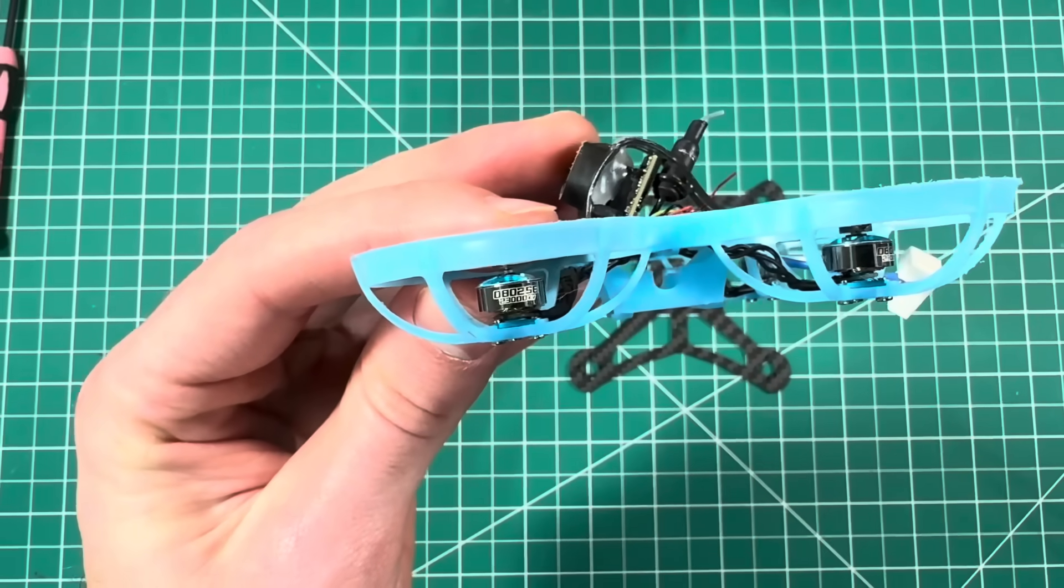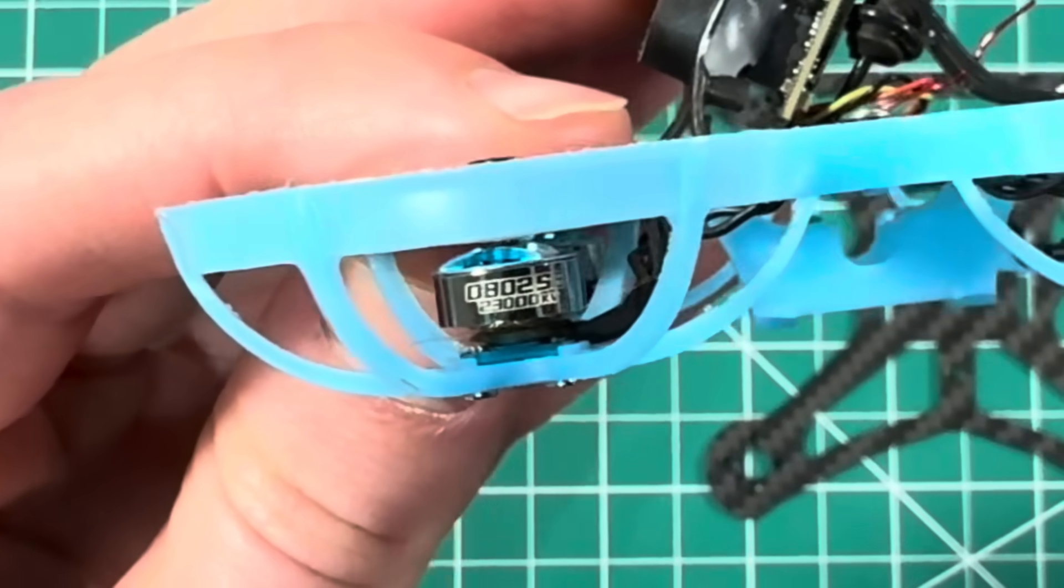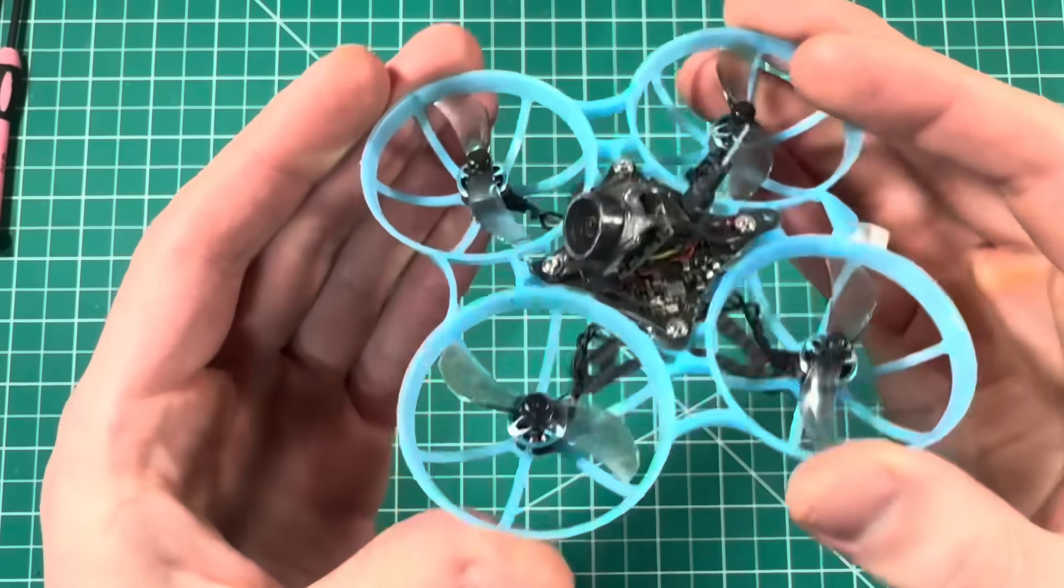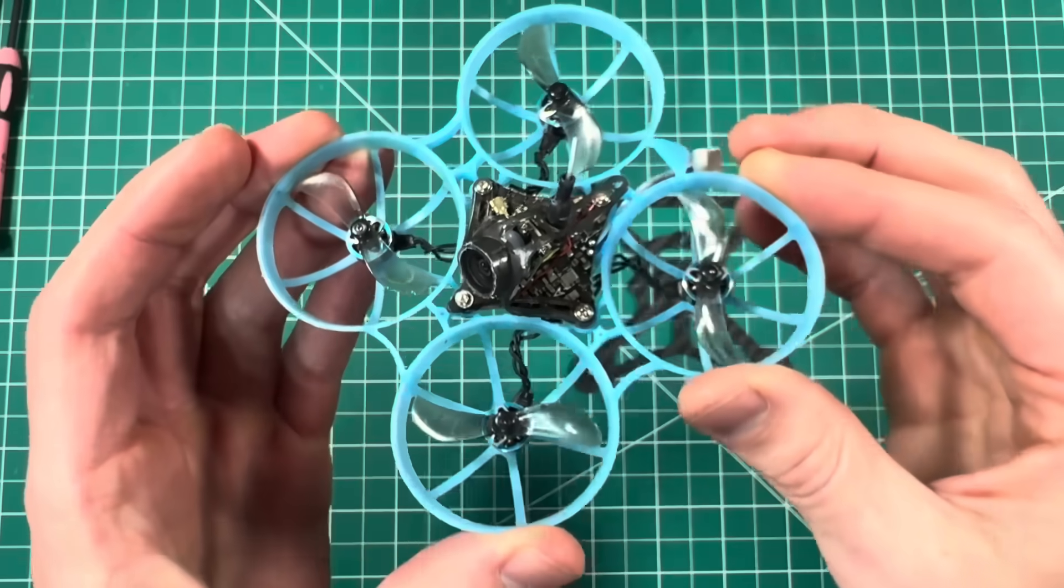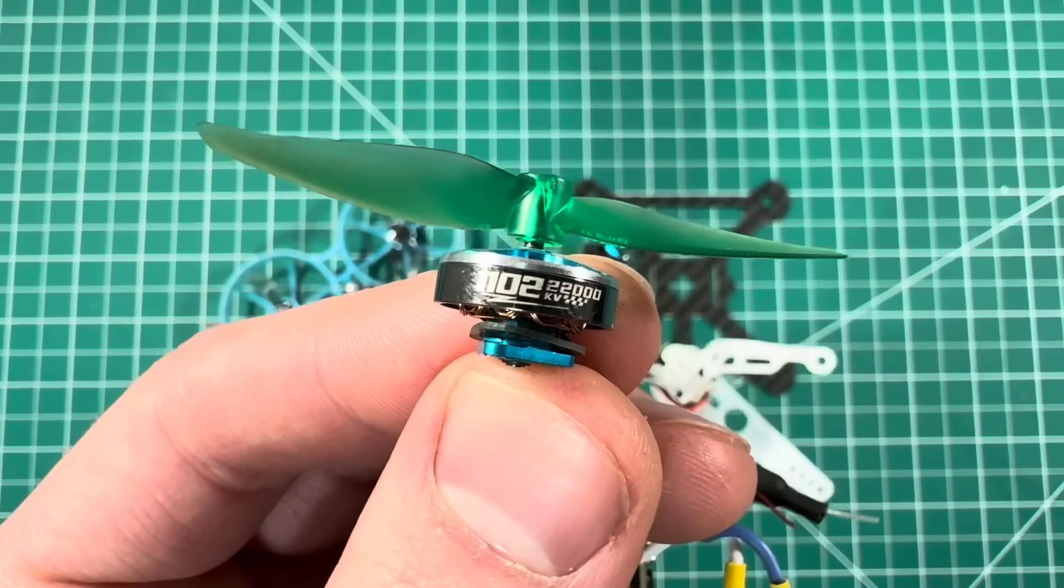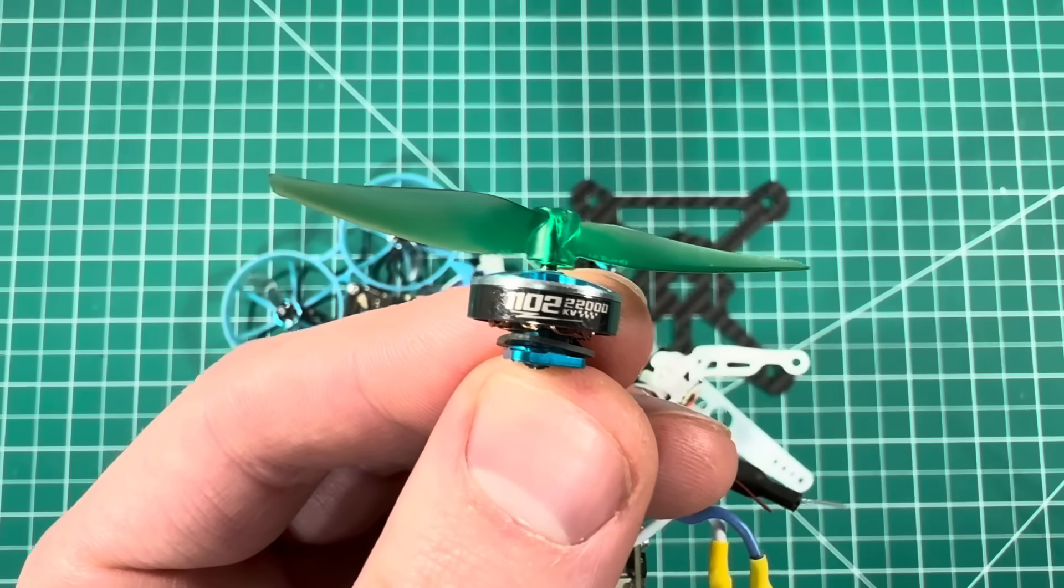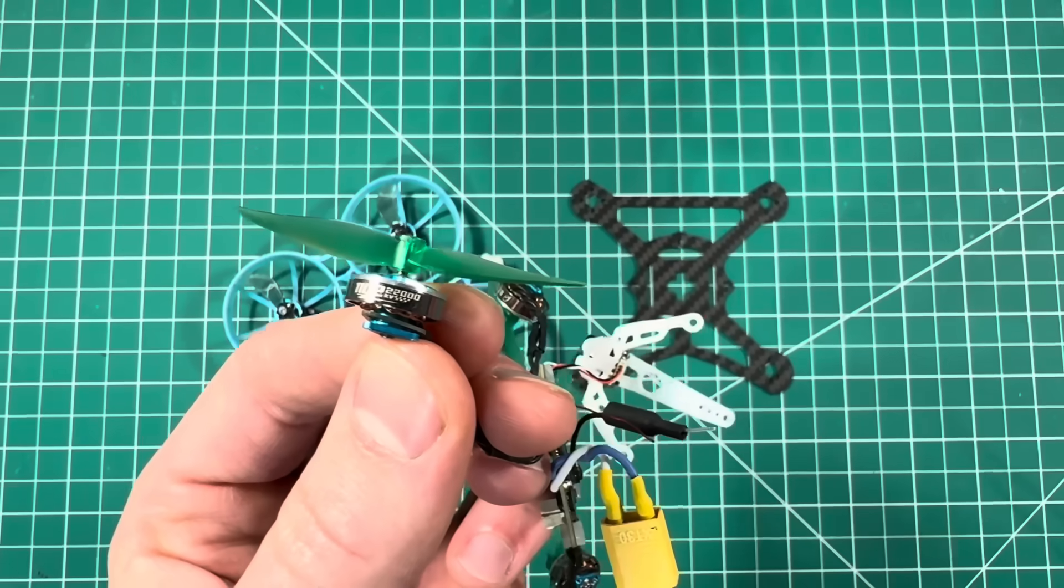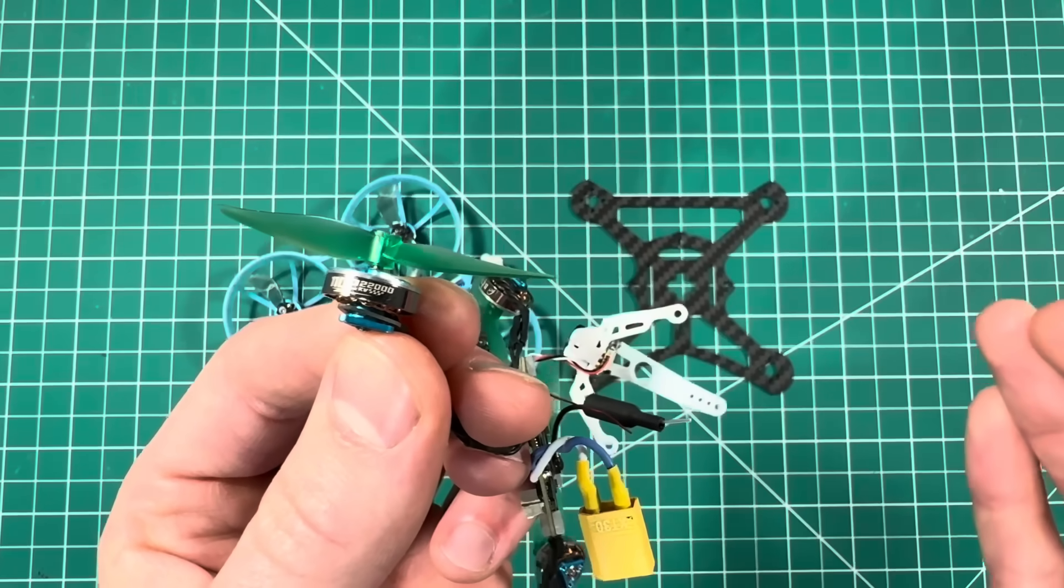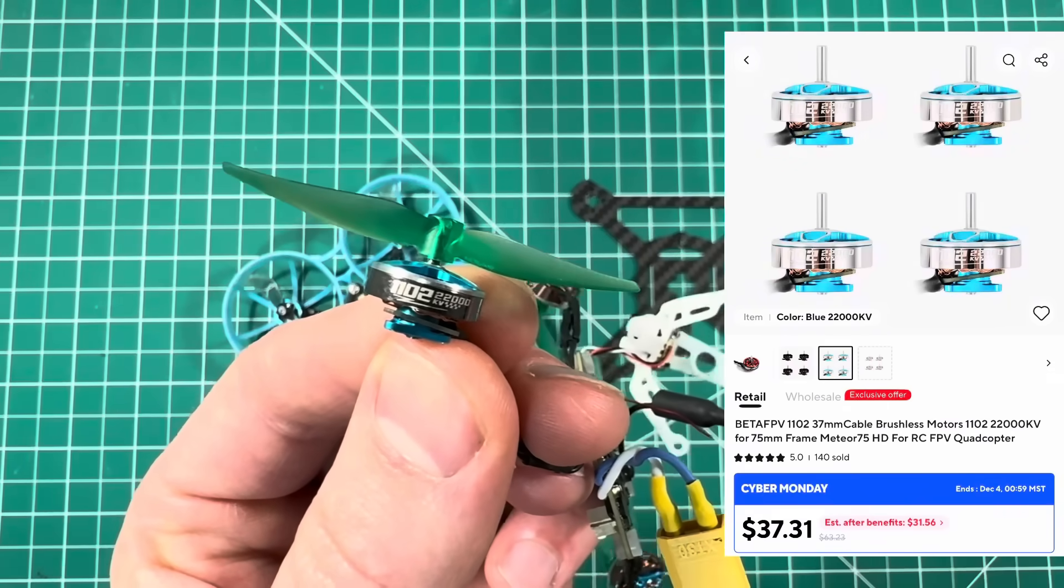So a lot of 75 millimeter Tiny Whoops come with 0802 motors. Now these are just too small to efficiently carry a lithium ion battery. I found that 1102 motors are about as small as you can go and still carry an 18650 effectively. So if you have a Tiny Whoop like the Meteor 75 Pro that comes with these 1102 motors, you're in luck. You won't need to switch anything out.